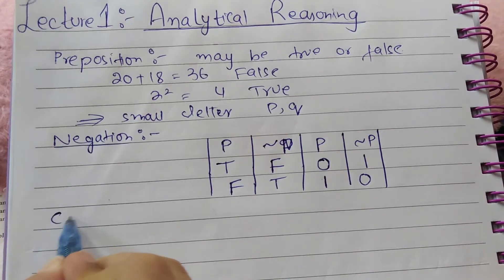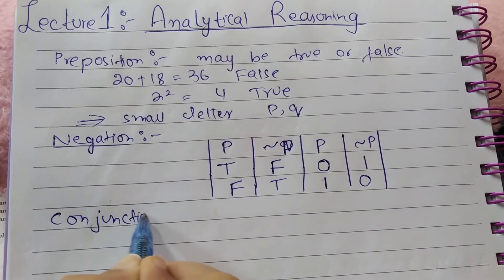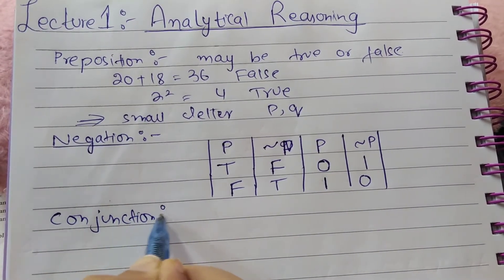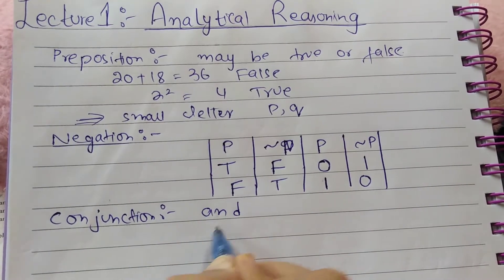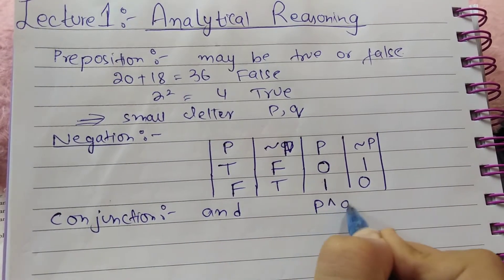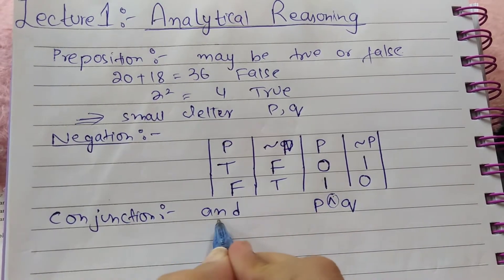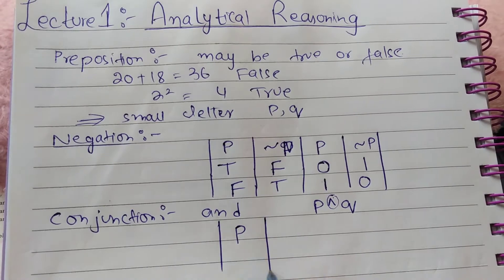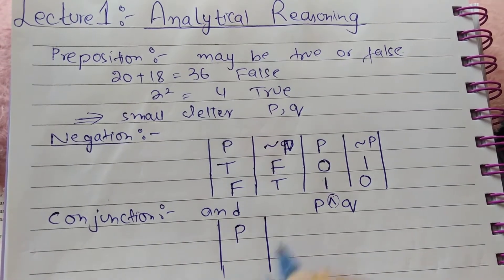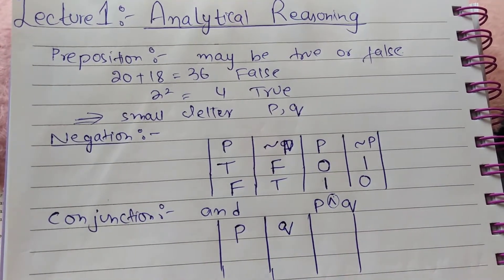The next type is conjunction, which means AND — represented as P AND Q. It is represented by the conjunction symbol (∧).